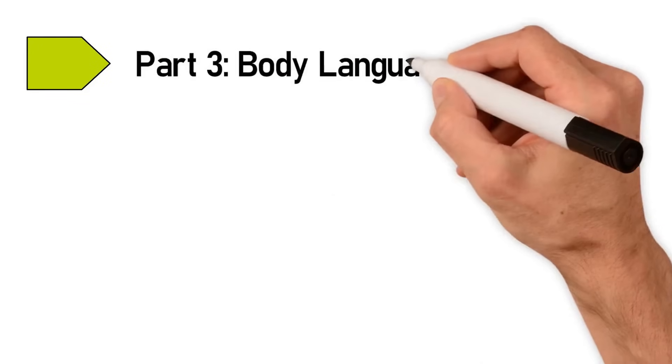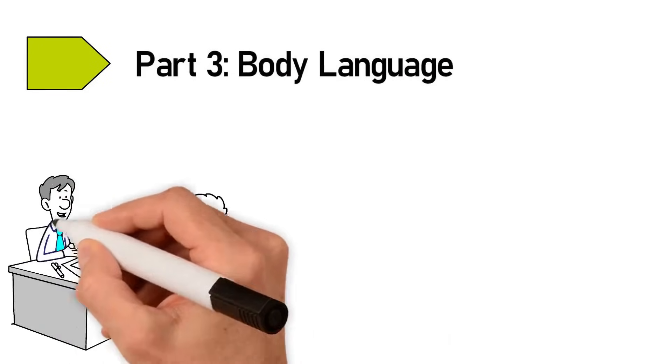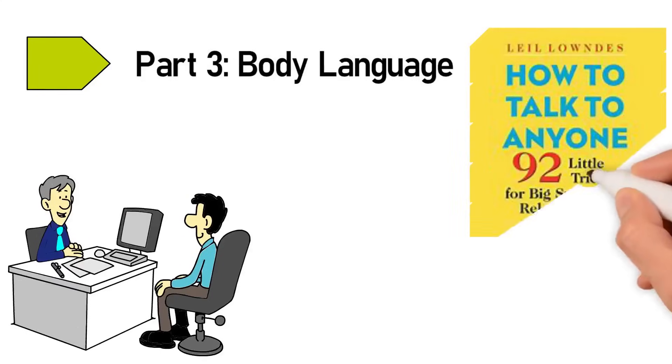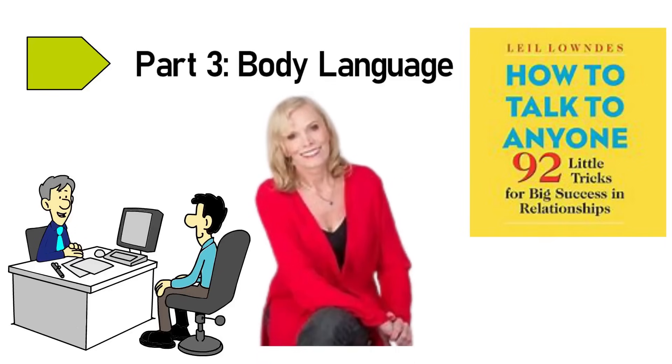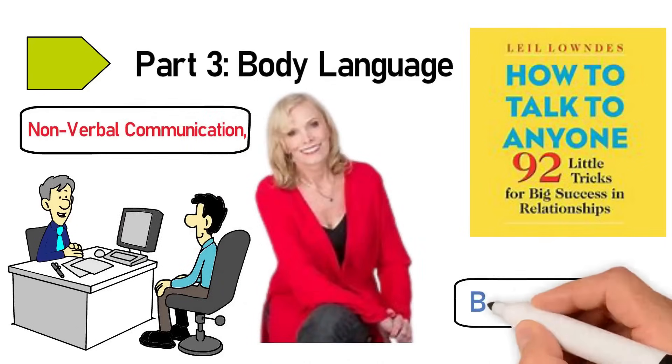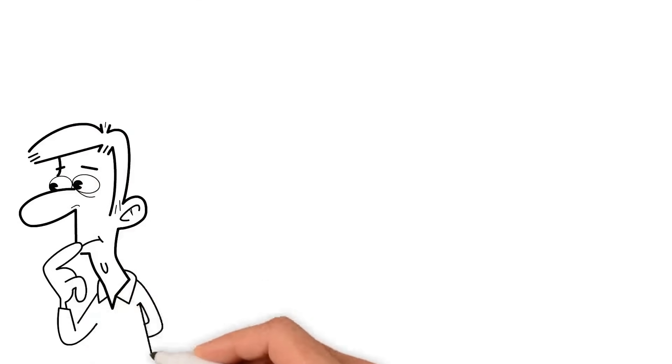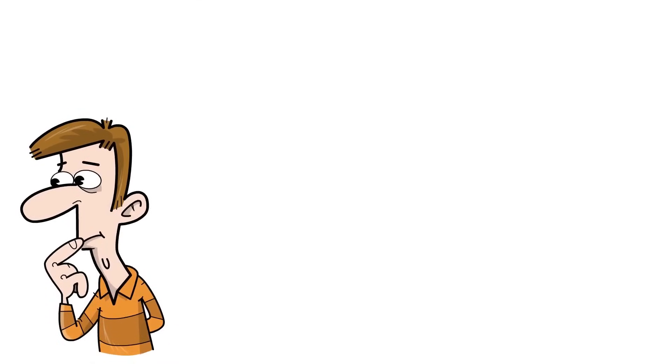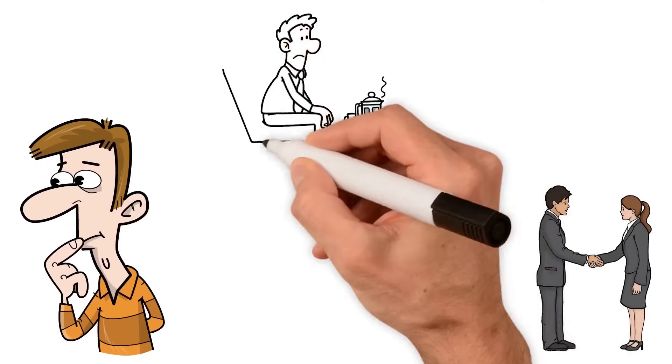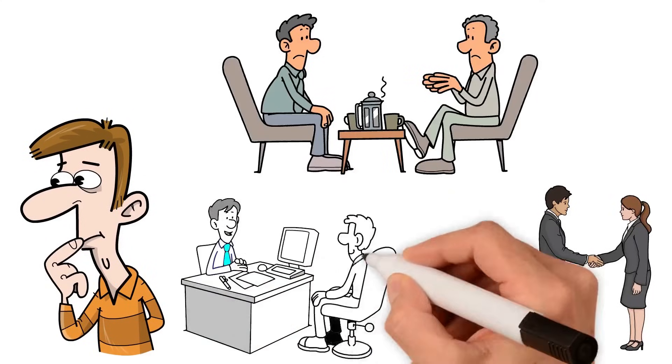Part 3: Body Language. When we talk to people, what we say is important, but it's not everything. How to Talk to Anyone by Leil Lowndes teaches us about the huge role of non-verbal communication, which includes things like body language. Body language can show feelings and thoughts that we don't say out loud. It's really important to understand and use body language well, both in our personal lives and at work. It helps us to communicate better and connect more deeply with others.